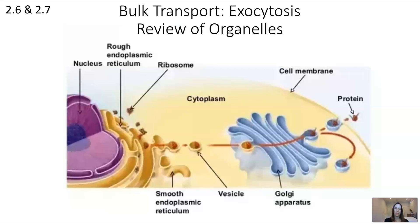The protein moves from the rough endoplasmic reticulum via a vesicle to the Golgi apparatus, which finishes processing through specialized enzymes and environments as the protein moves layer to layer. The Golgi also adds signaling tags and identifiers so the protein ends up in the right location. After processing, the protein goes into a vesicle that moves to the plasma membrane, binds with it, and releases the protein extracellularly. That concludes this video covering AP Biology Unit 2, Sections 2.6 and 2.7.